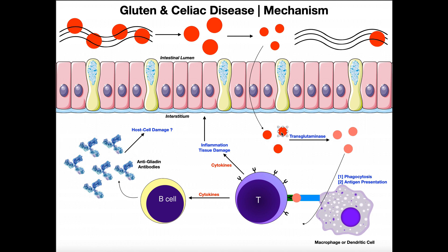Here we have these gliadin peptides. There is an enzyme in the interstitium called transglutaminase, and it basically chemically modifies components of these gliadin peptides. Now they are in a particular modified form — shaded a slightly different color to indicate they have been modified by transglutaminase.